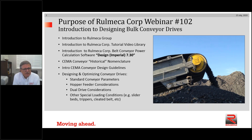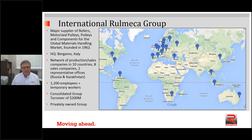In addition to conveyor design guidelines, we're going to give you designing and optimizing tips on things such as hopper feeder considerations and dual drive considerations. As a company introduction, Romeka is a major supplier of rollers, motorized pulleys, and components for the global materials handling market. We are located in more than 20 countries, headquartered in Northern Italy, with approximately 1,200 employees and a consolidated group turnover of about $200 million. We are a privately owned group.